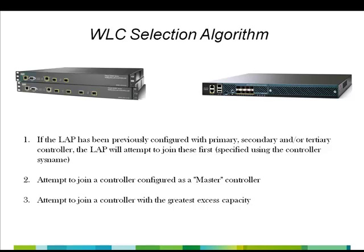We are now set to select the best controller from the list of candidate controllers using the wireless LAN controller selection algorithm. The lightweight access points use three criteria to select the best controller. If the access point has been previously configured with a primary, secondary, or a tertiary controller, the access point will attempt to join these first. If not, it will attempt to join a controller configured as a master controller. If both these criteria fail, the access point will join a controller with the greatest access capacity.